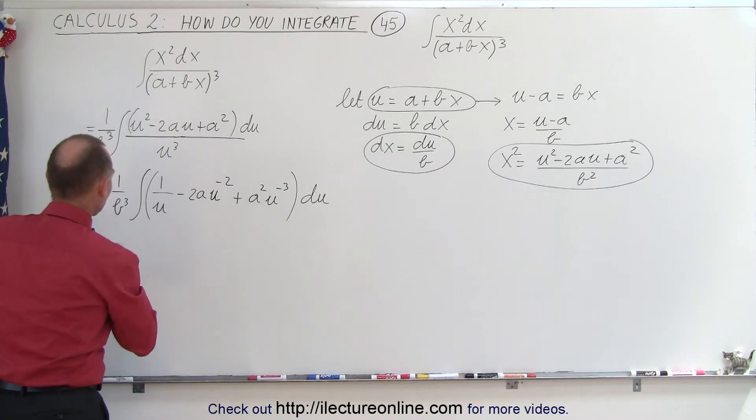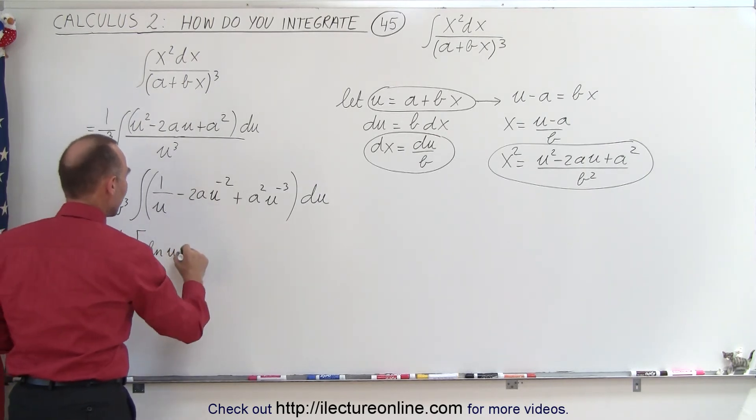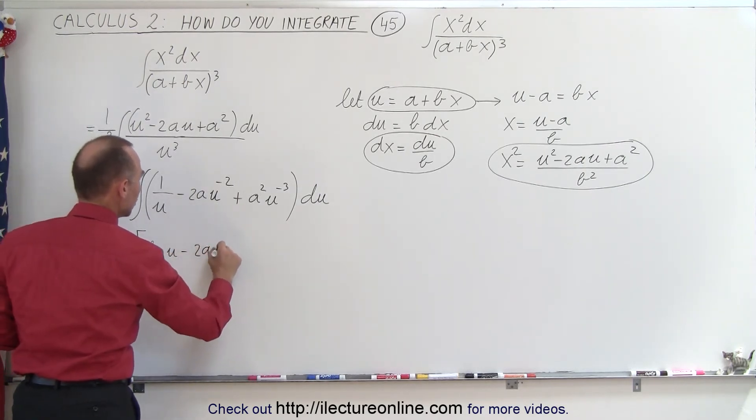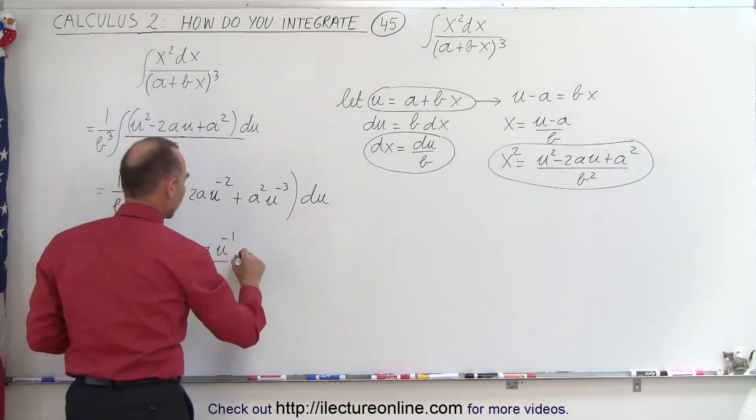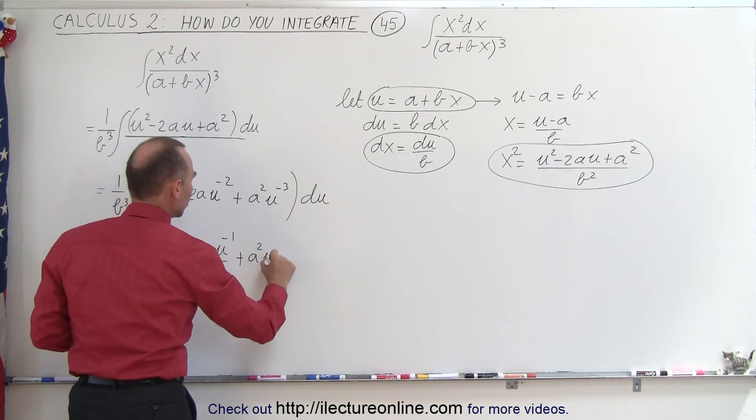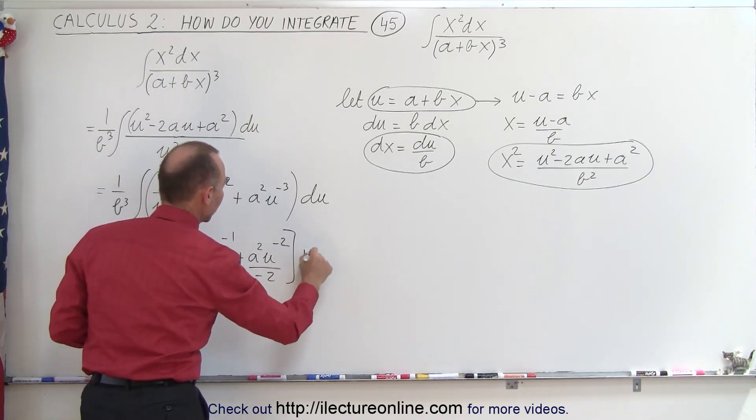Let's go ahead and integrate those. This is equal to 1 over b cubed times, this becomes the natural log of u. Here we get minus 2a, u to the minus 1 divided by minus 1, and here we get plus a squared u to the minus 2 divided by minus 2, and of course, the constant of integration.